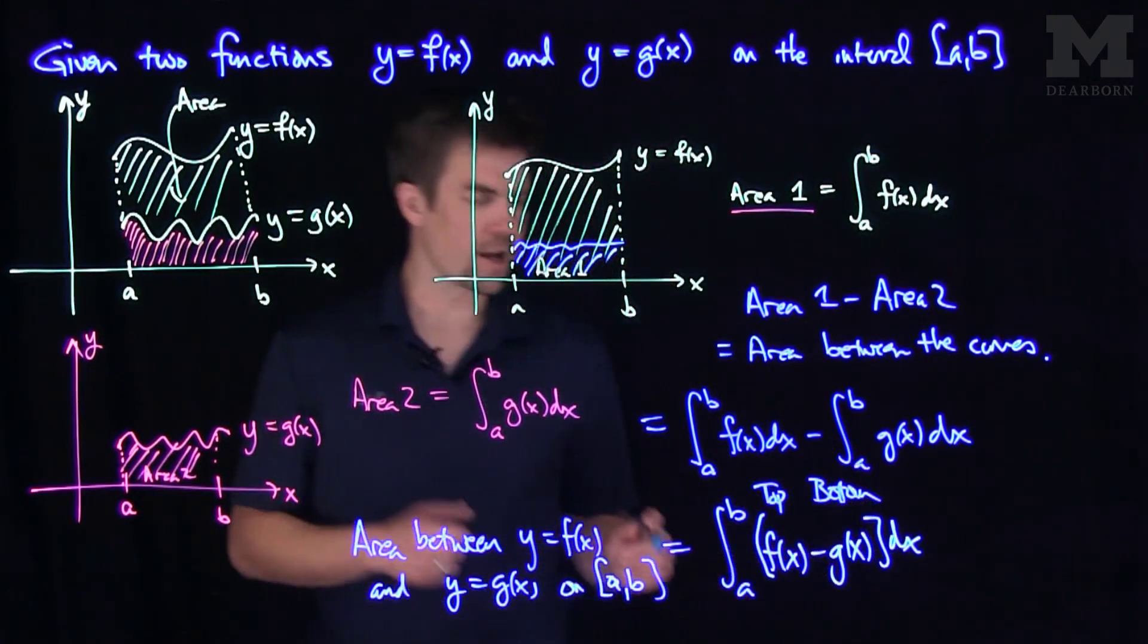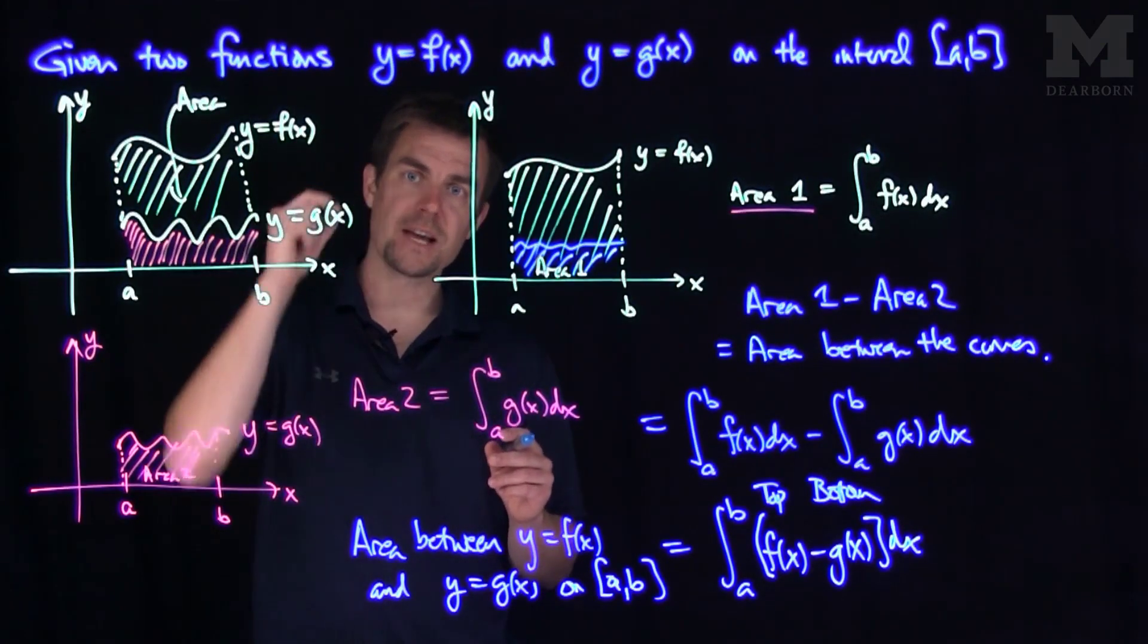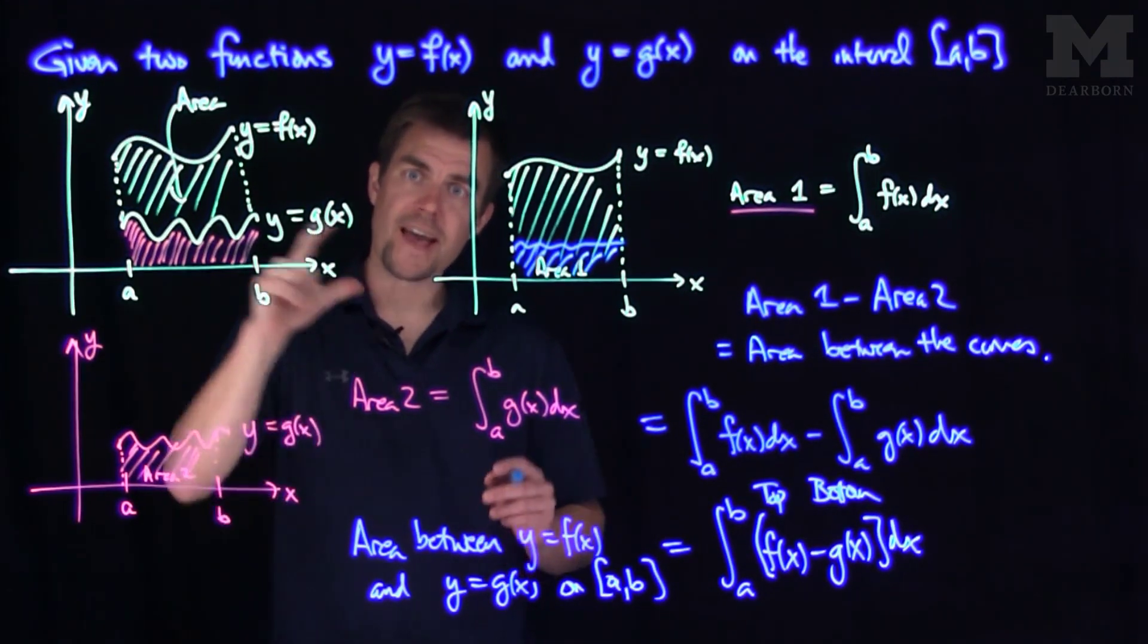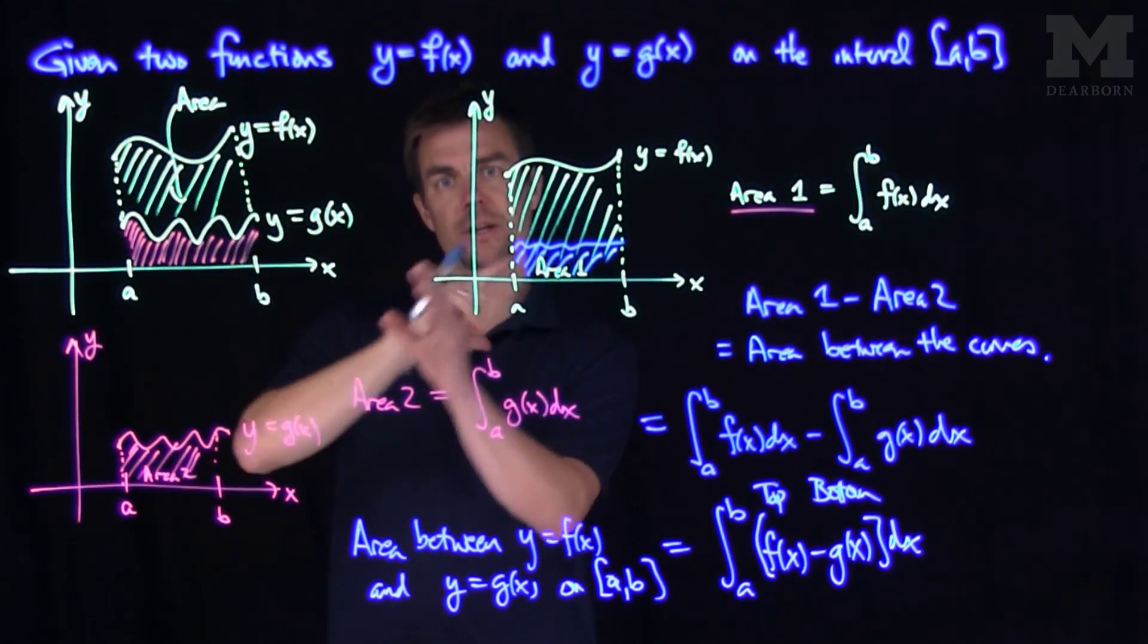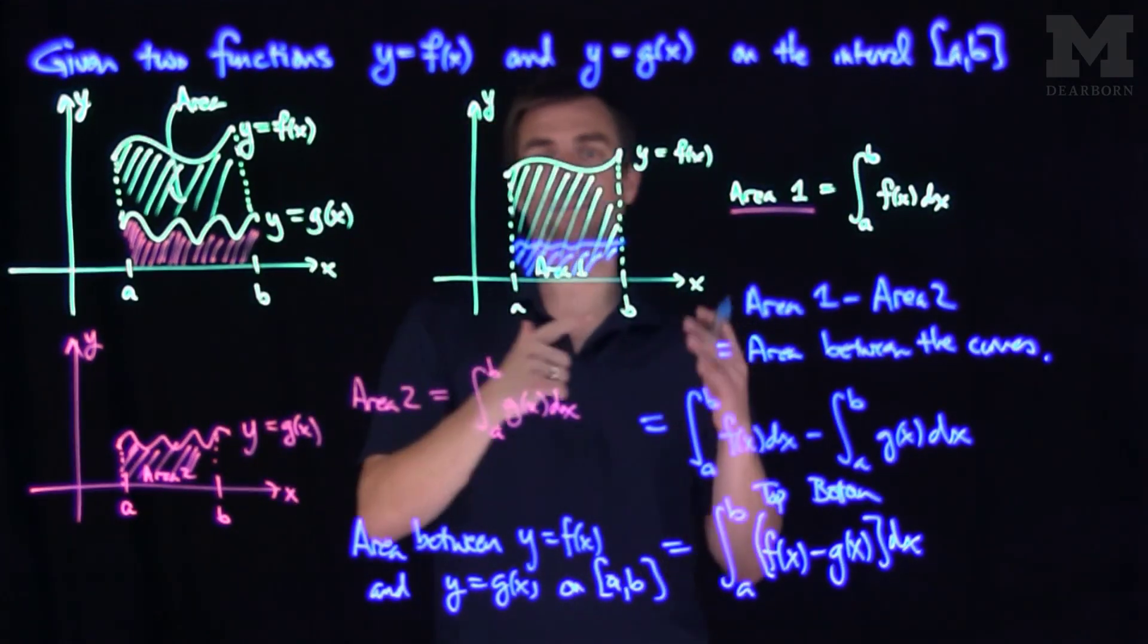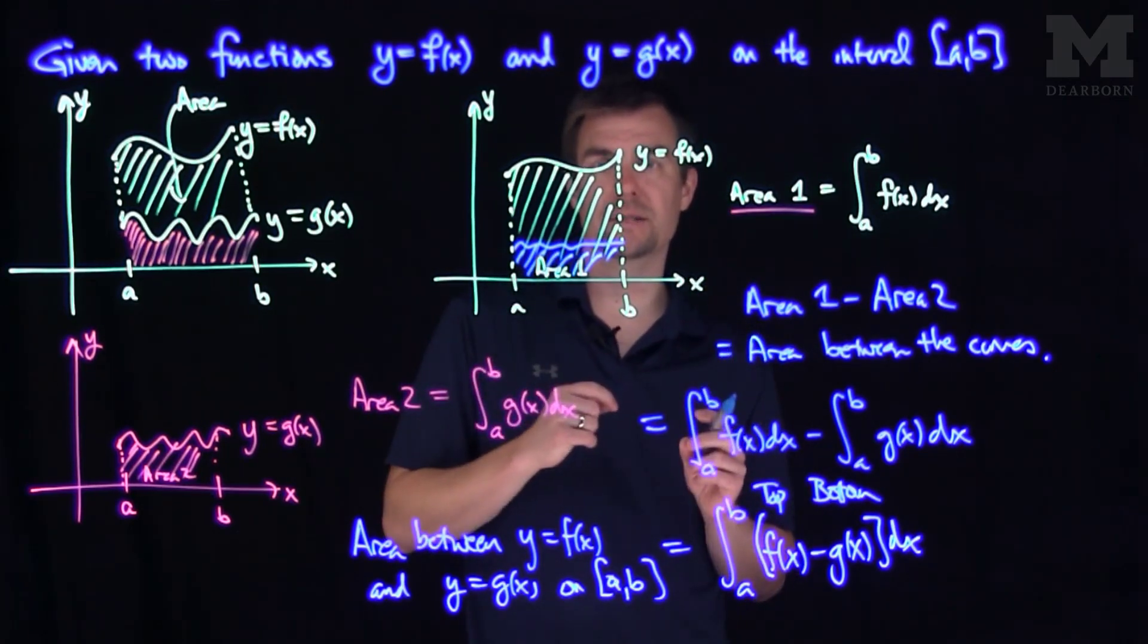So oftentimes what we'll say is the area between two functions or two curves is the integral of the top function minus the bottom function. And it's easier to see this geometrically than it is analytically, so we always want to remind ourselves that the picture is what gives us the proof that the area between two curves is the integral of the top function minus the bottom function.